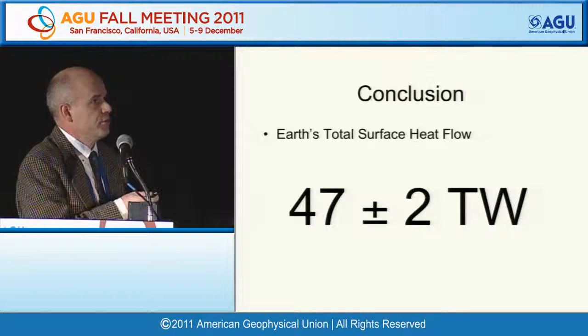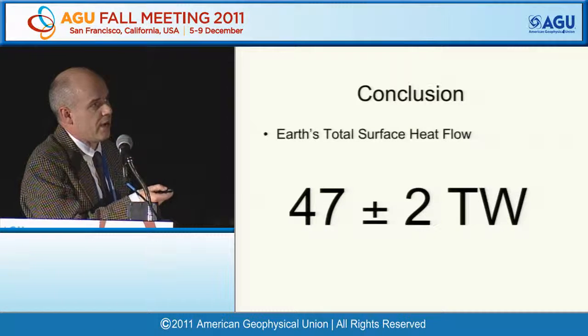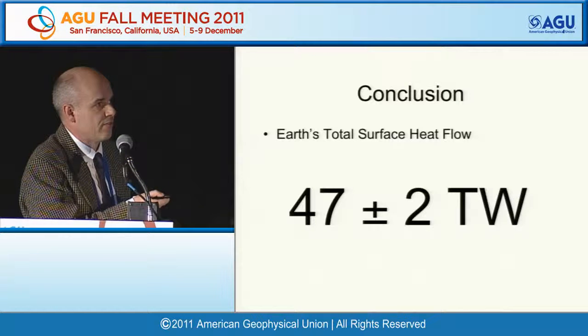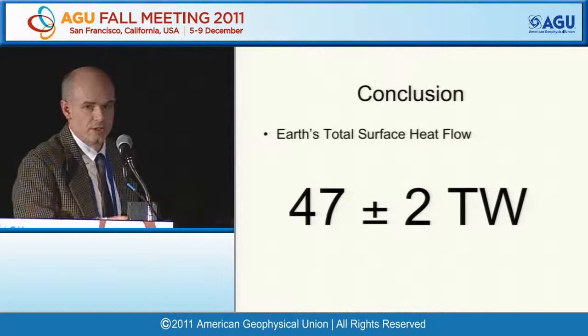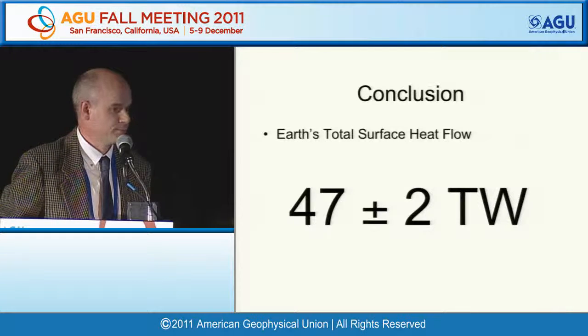To conclude very simply: our revised estimate of the Earth's total surface heat flow is 47 terawatts, plus or minus 2 terawatts.